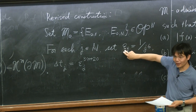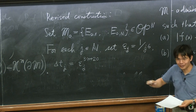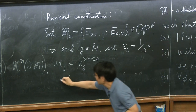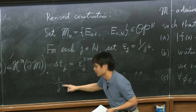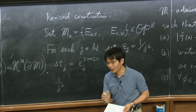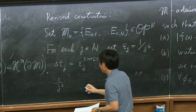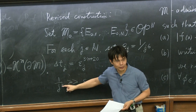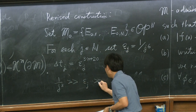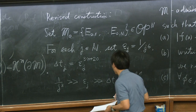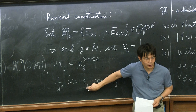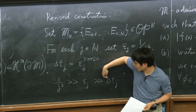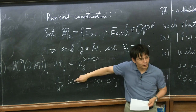I choose the scale of smoothing of the mean curvature vector to be much smaller than 1/j² (the scale of the Lipschitz deformation). And I want the time step δt_j to be much, much smaller than the smoothing parameter ε_j. So there are three kinds of length scales: time step ≪ smoothing ε_j ≪ Lipschitz deformation scale 1/j².